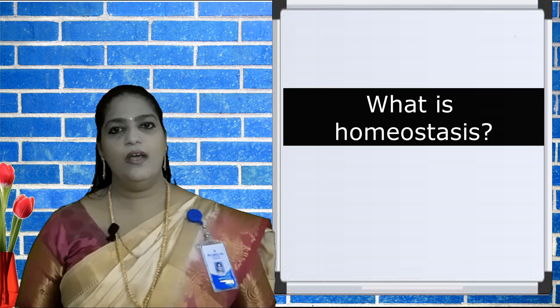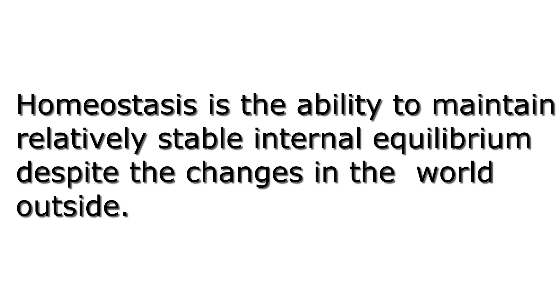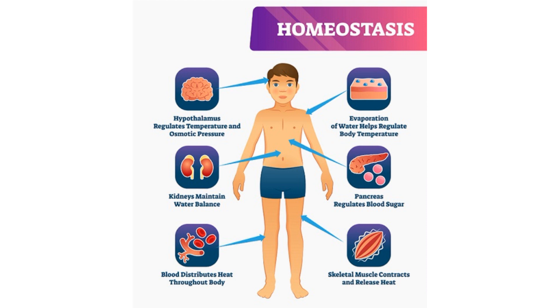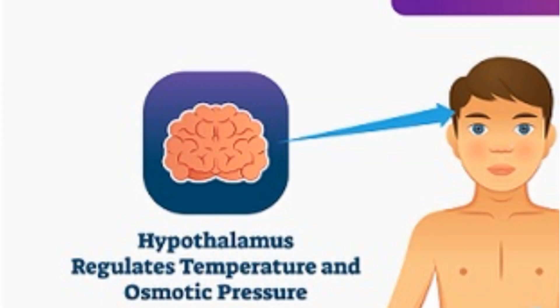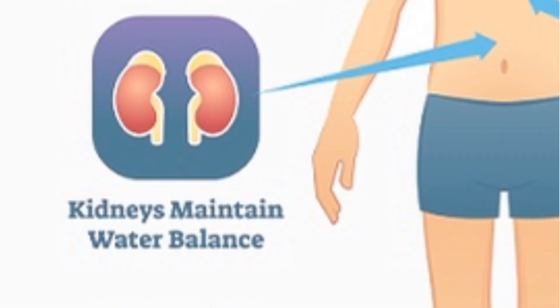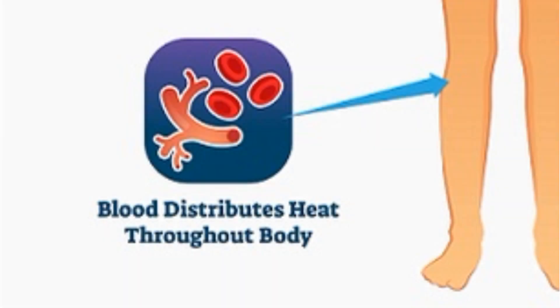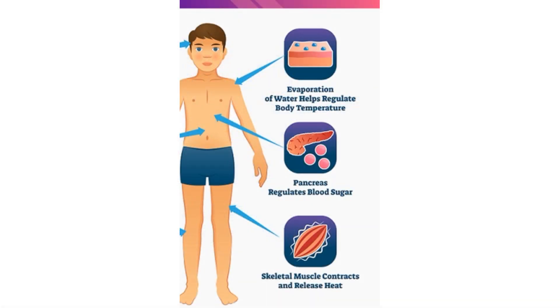The most striking feature is that they are so well-coordinated in order to maintain our homeostasis. Homeostasis is the ability to maintain relatively stable internal equilibrium despite the changes in the world outside. This is a simple illustration showing how our body maintains homeostasis — for example, the hypothalamus helps to regulate temperature and osmotic pressure, and the kidney maintains water balance.